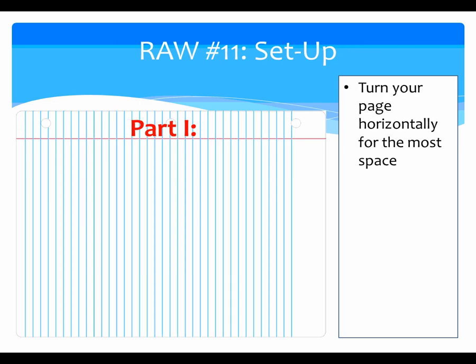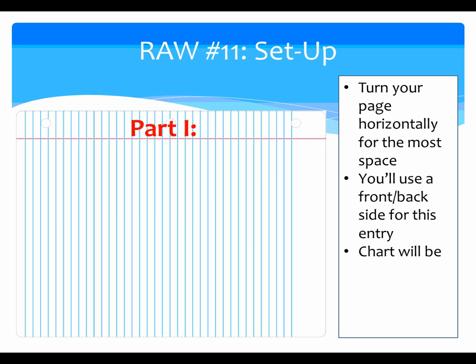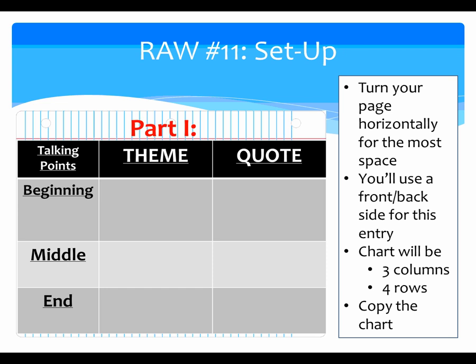Now the entry itself — we're going to label the first step as part one. I'm going to ask that you turn your notebook horizontally so you get the most space for the chart we're going to be developing. You want to use the front and back of a page in your notebook, and skip around some room if needed. You're going to be making a chart that has three columns and four rows, and you want it to take up the entire space on that page. That very top row can be as thin as you want — it's only to label the columns. It's rows two through four that you want to take up the majority of space.